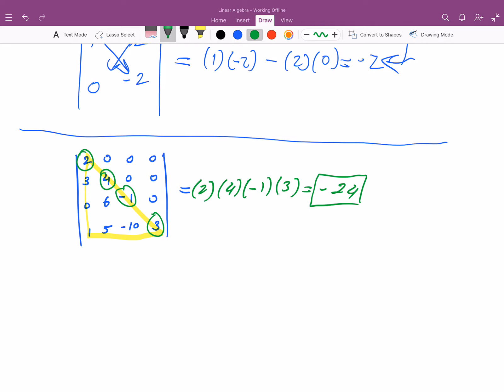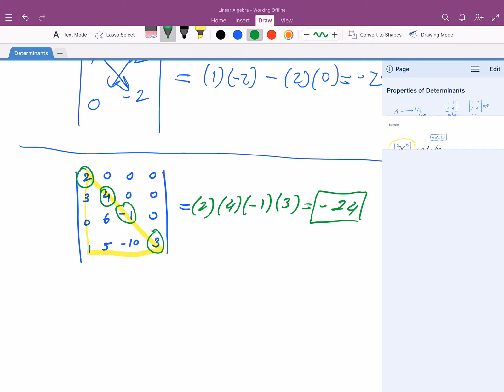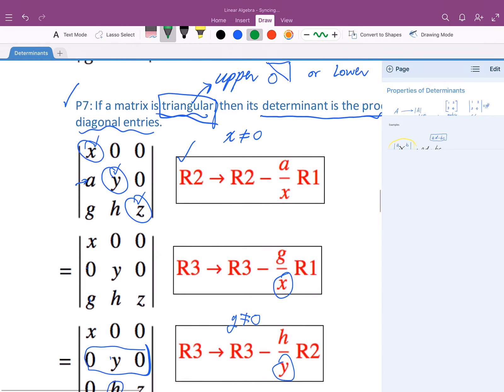So the determinant is easy for triangular matrices. And obviously, since diagonal matrices are triangular, then this works for diagonal matrices as well. Going back to properties, let's look at property 8.